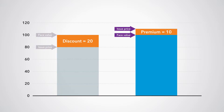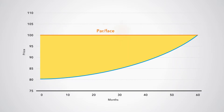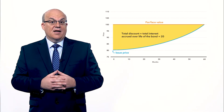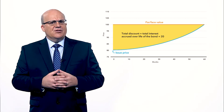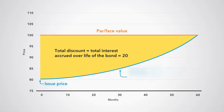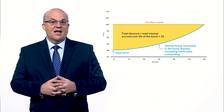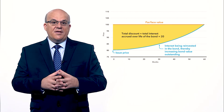The discount of 20 and the premium of 10 represent the total amount of interest to be amortized over the life of the bond on an accrual basis. A discount would result in interest of 20 being accrued over the life of the bond. The interest expense accruing in each period is recorded as being reinvested in the debt security, so it increases the principal amount outstanding. This is consistent with the accrual of interest.